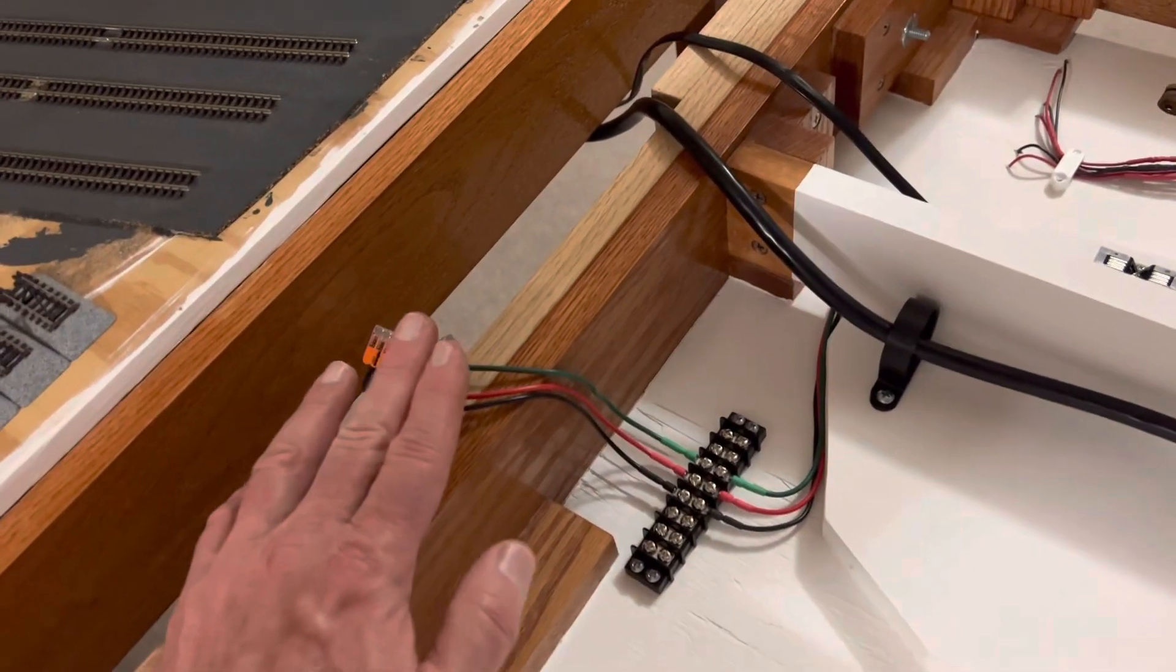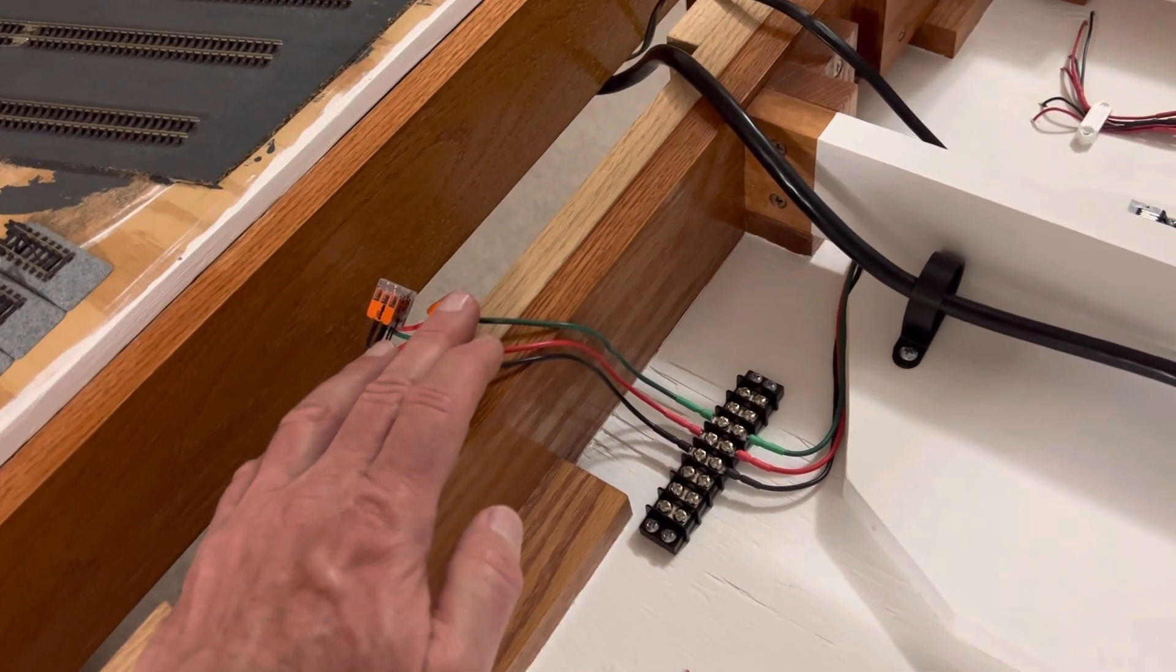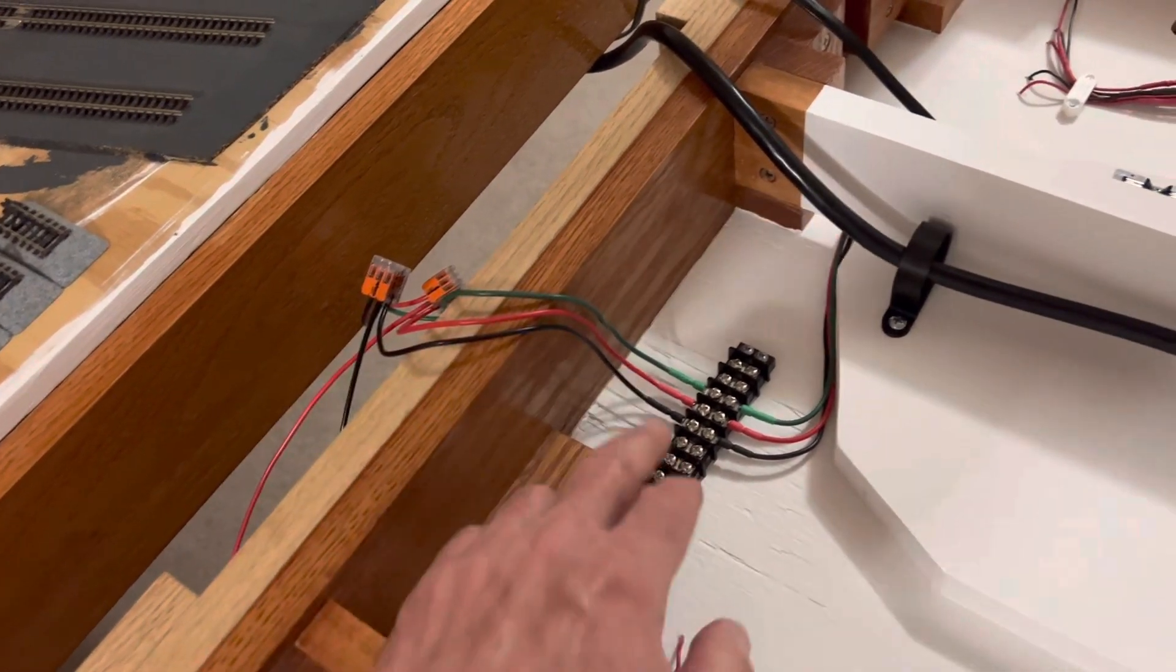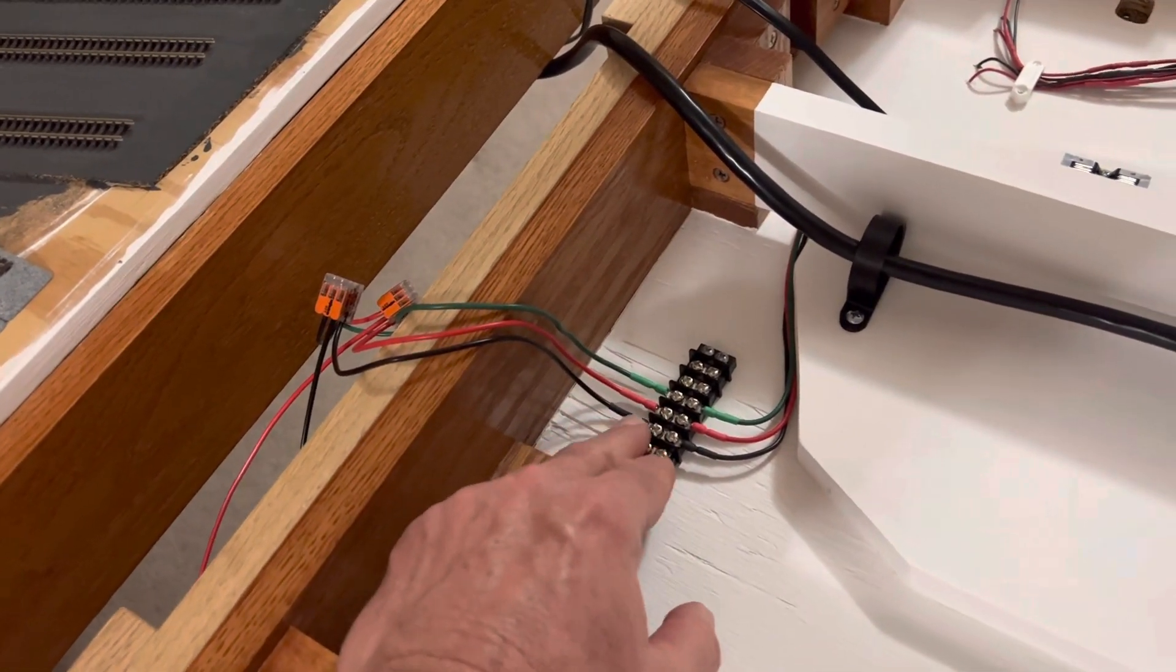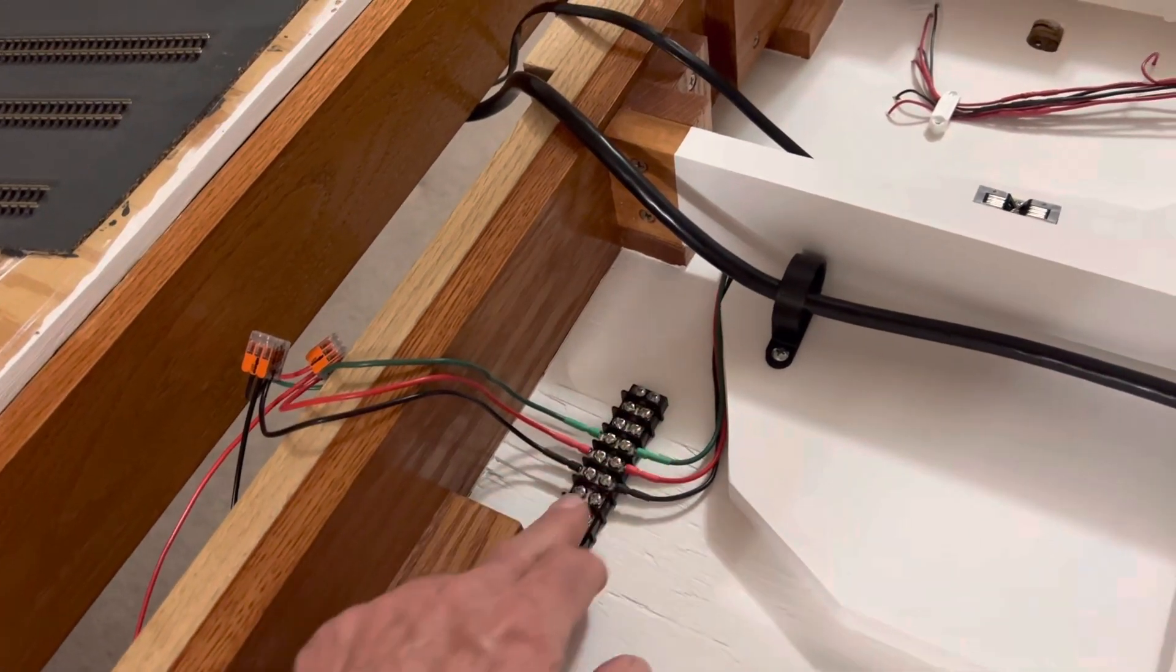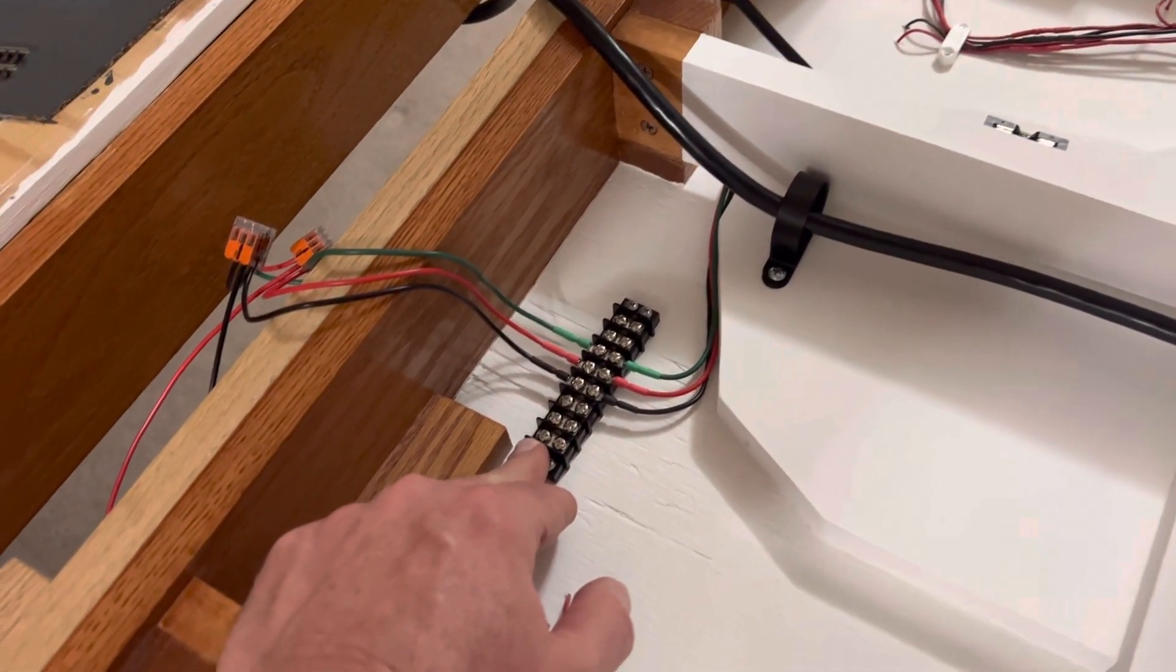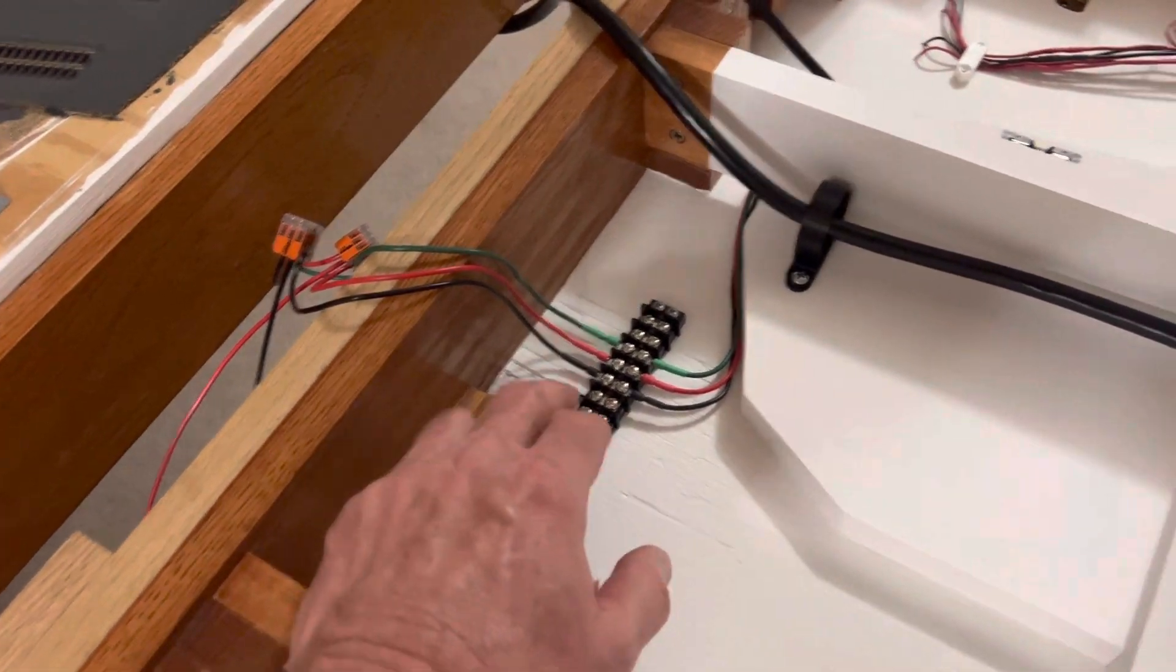That's going to go across the table, go underneath. Here's my DCC bus that goes across. You recognize the three wires. I've been changing my mind on what I'm taking across it, but I'm trying to take as little as possible.